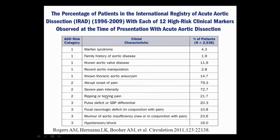An important take-home regarding symptoms: with angina or MI, pain often comes on gradually, building in intensity. With aortic dissection, the classic presentation is abrupt — patients describe it as 'boom,' going down immediately in severe pain, even with syncope. They can pinpoint the exact moment it started. That abrupt onset of pain in someone with risk factors is really important.